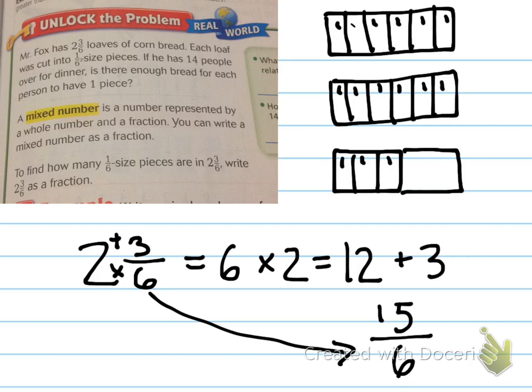So, again, the numerator tells you how many pieces there are. Fifteen sixth-sized pieces. So, yes, we have enough for fourteen people, plus one left over, maybe for Hinkley.